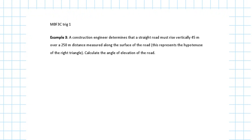Alright guys, so what do you think? The construction engineer determines that a straight road must rise vertically 45 meters over a 250 meter distance measured along the surface of the road. So this represents the hypotenuse of the right triangle. Calculate the angle of elevation of the road.